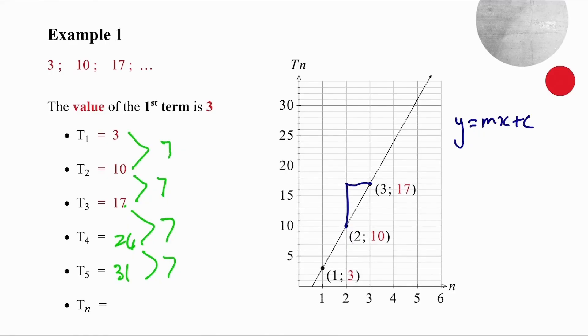The gradient would be the rise over the run. So the rise would be the difference in the y values, which in this case is 7, and the run would be the difference between the x values, which in this case is 1. So our gradient would be 7, and we would go y equals 7x plus c. To work out the c value, we would substitute any points. So I would choose the easiest point, (1, 3). So 3 is the y value, x is equal to 1, so we work out that c equals negative 4.